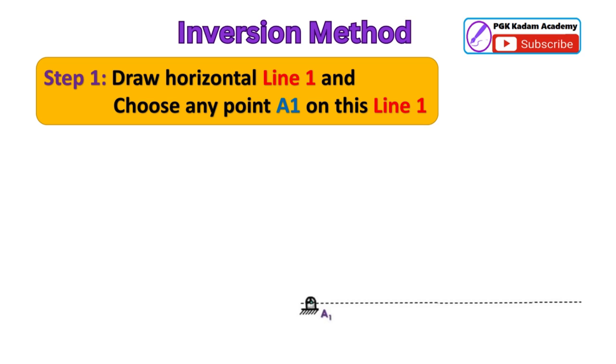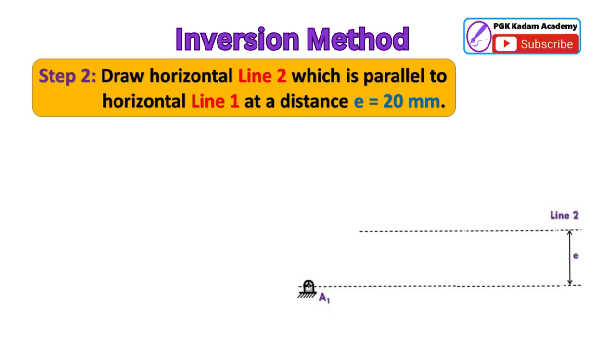Step 1: Draw horizontal line 1 and choose any point A1 on this line 1. Step 2: Draw line 2 which is parallel to horizontal line 1 at eccentric distance given in problem statement. Distance E equal to 20 mm.